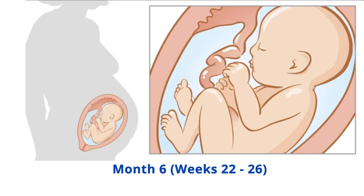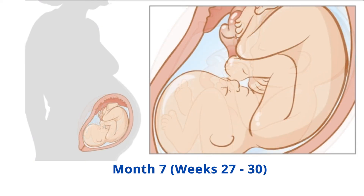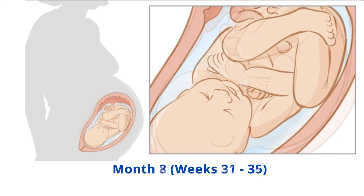Month 6, weeks 22-26: your baby gains a substantial amount of fat this month, which helps them retain body heat. Their heartbeat can now be heard by an ordinary stethoscope. Although several organ systems are now functioning, their lungs have not yet fully developed. Month 7, weeks 27-30: space starts to get tight in the womb and your baby takes on a curled up position with arms and legs crossed. Their central nervous system is mature and can direct breathing and control body temperature.